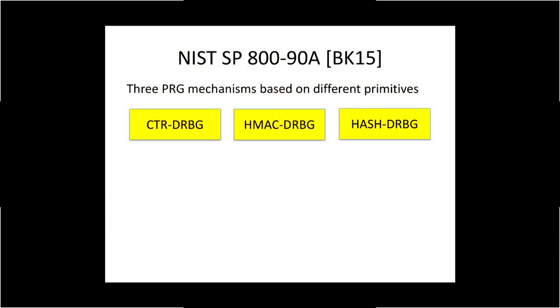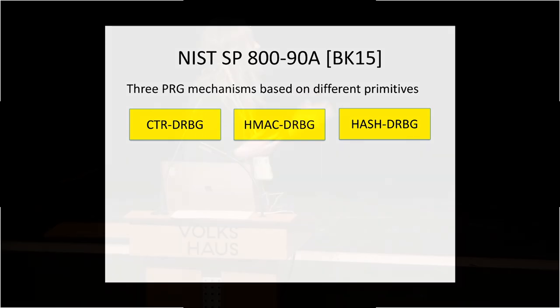It's of absolute importance that standardized PRGs, which are going to be very widely used, are designed to be as secure as possible. The NIST SP-800-90A standard gives three mechanisms for building PRGs, each based on a different primitive: the counter-DRBG, based on a block cipher; the HMAC-DRBG, based on HMAC; and the hash-DRBG, based on a strong cryptographic hash function.